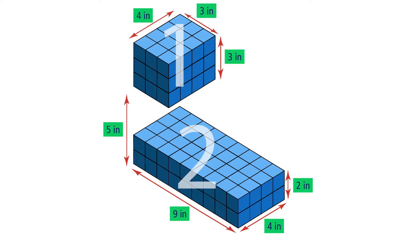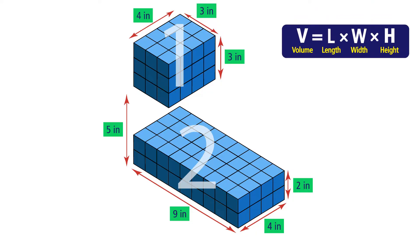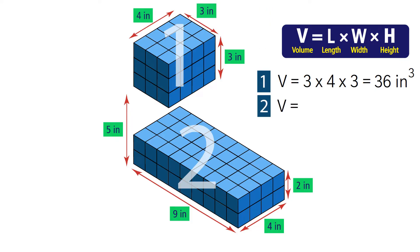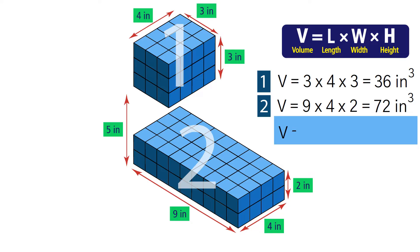Now let's find the volume of each prism using the formula: volume of a rectangular prism equals length times width times height. The volume of prism 1 is 3 times 4 times 3, which equals 36 inches cubed. The volume of prism 2 is 9 times 4 times 2, which equals 72 inches cubed. To find the volume of the composite figure, we add the two volumes: 36 plus 72 equals 108 inches cubed. So the volume of the original figure is 108 inches cubed.